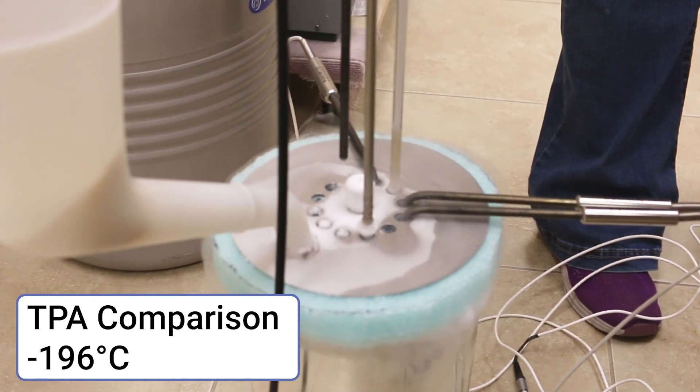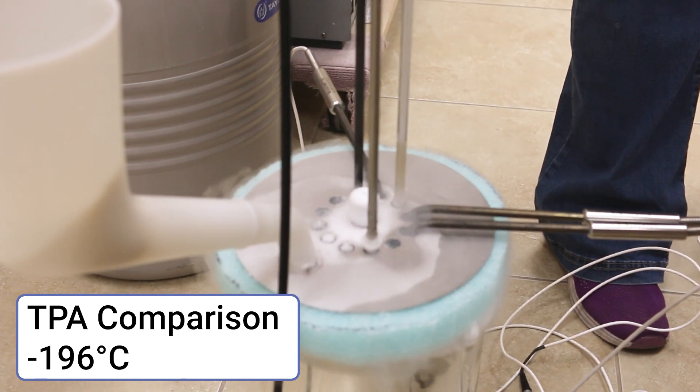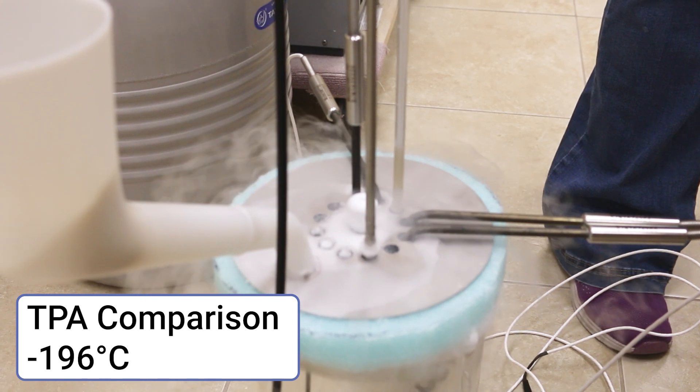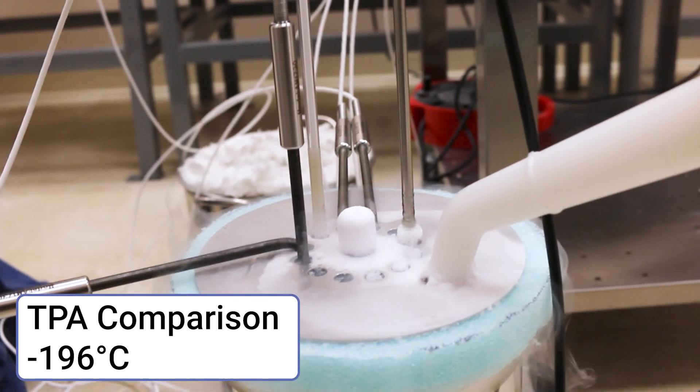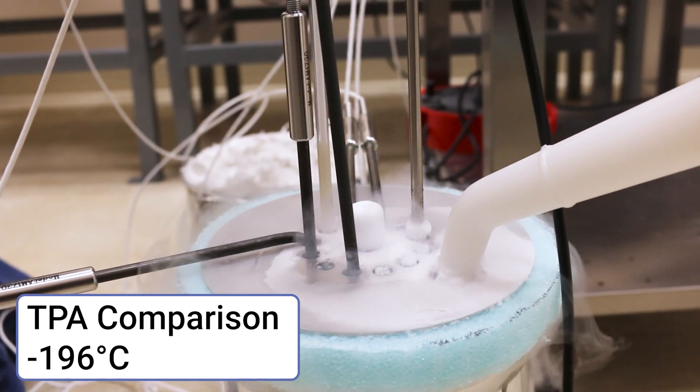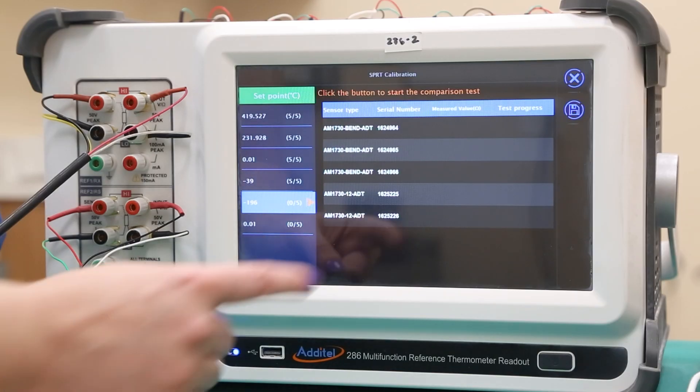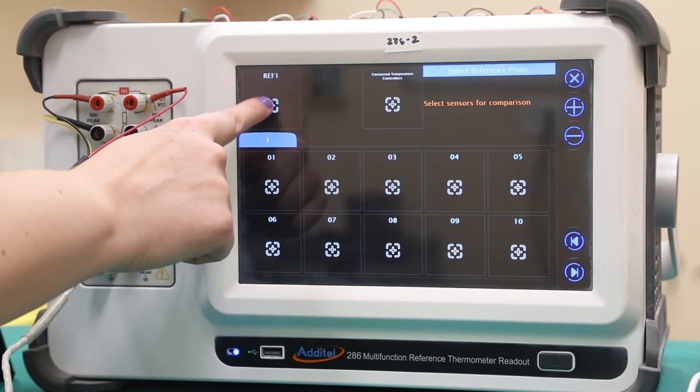The next calibration point, the triple point of argon, will also be done using a comparison test by using a liquid nitrogen comparison calibrator at the temperature of roughly negative 196 degrees Celsius. Once the DUT probes and a reference probe have all been inserted into the liquid nitrogen, the same procedure as the previous comparison test should be followed.